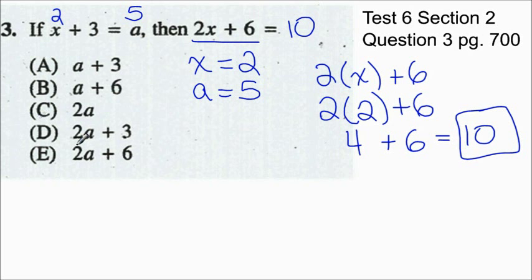Now we have to match our answer with 10. So let's go ahead and substitute the value we found into our answer choices. So a is 5. So 5 plus 3 is that 10? No. 5 plus 6 is that 10? No. 2 times 5 that does equal 10. There's our answer right there. C is the correct answer.